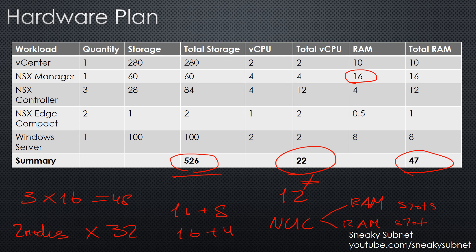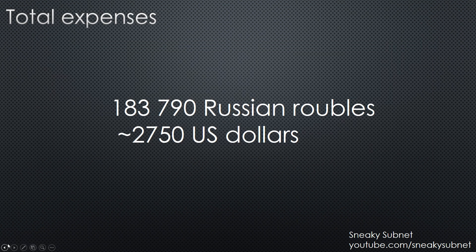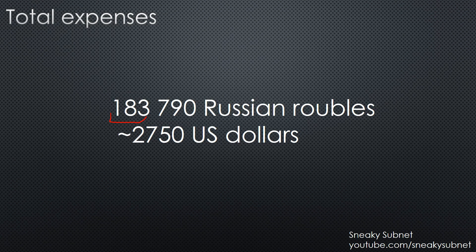Anyway, one more thing — in the previous video I forgot to mention the total cost of my lab. Here are the numbers: in Russian currency, which is called the ruble, it is almost 184,000 rubles. To make your life easier I have converted it to US dollars according to the current exchange rate, and it is roughly 2,750 US dollars.